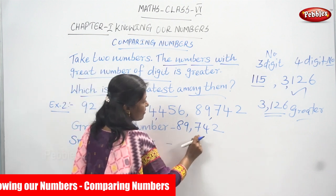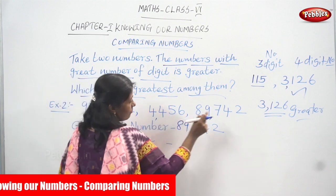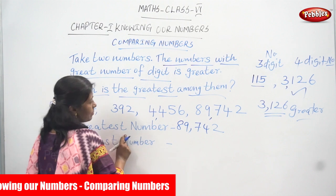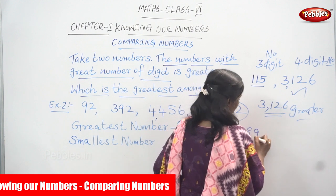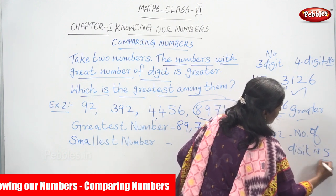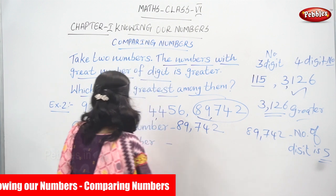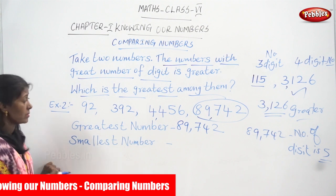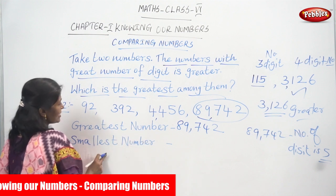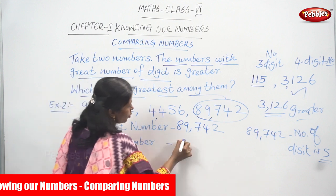So the greatest number is 89,742. We were given four numbers: the first is two digits, the second is three digits, the third is four digits, and the last is five digits. The numbers with a smaller number of digits are smaller. So 92 is the smallest number because it has only two digits.